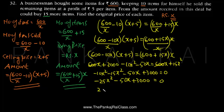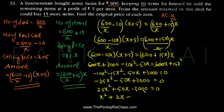Multiplying throughout by minus one gives 25X² + 50X - 3000 = 0. Dividing throughout by 25, this becomes X² + 2X - 120 = 0. This is the quadratic equation we need to solve.